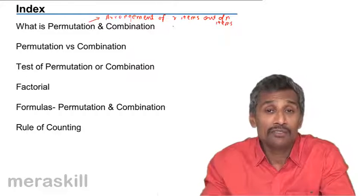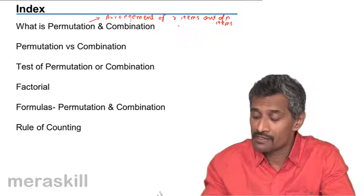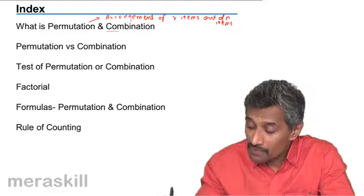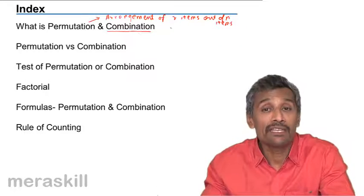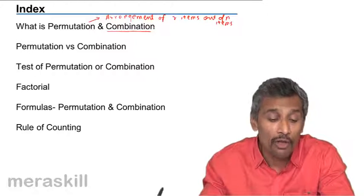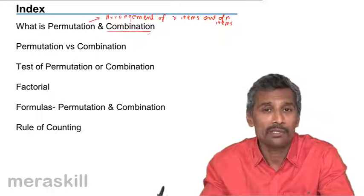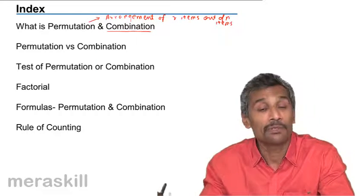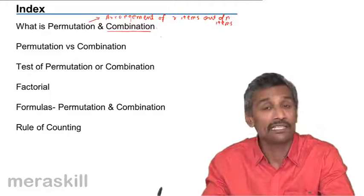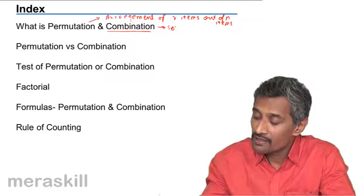Once you have selected two out of those five vowels, that part becomes combination. Now, you need to arrange them in various possibilities. What are the various possibilities of arranging the two vowels out of five? That becomes permutation, and just selecting them - selection is combination.